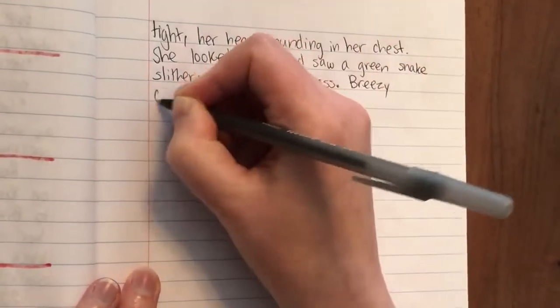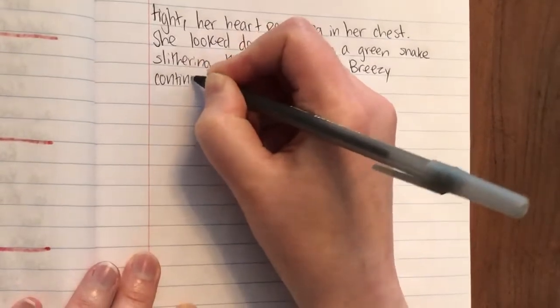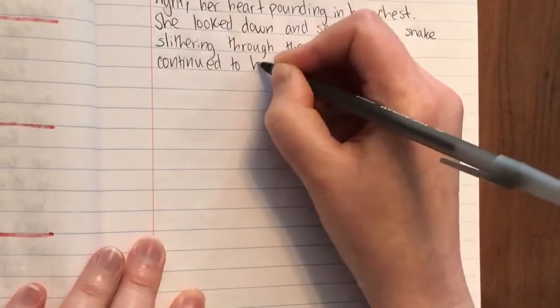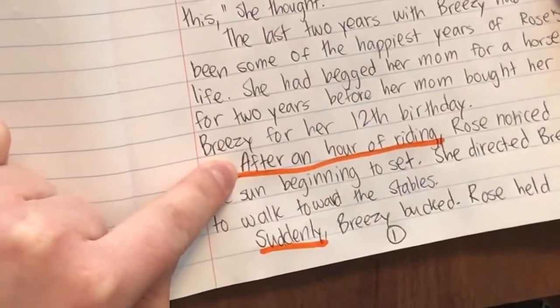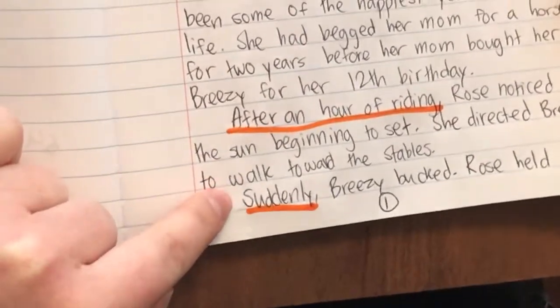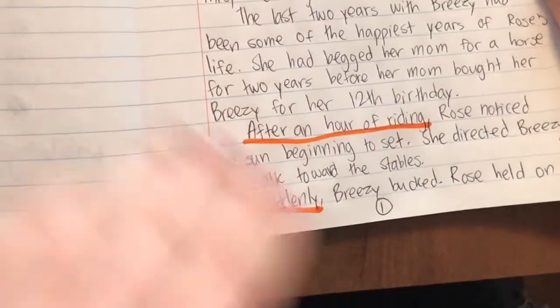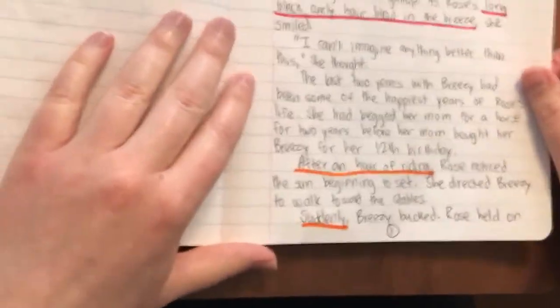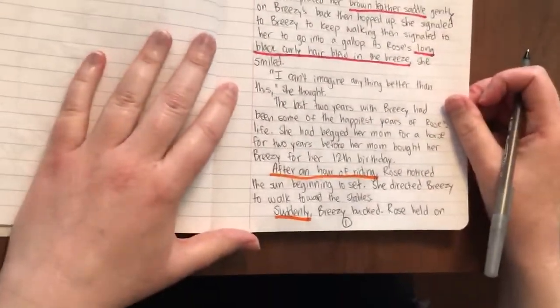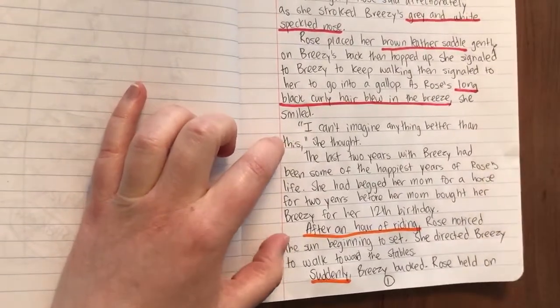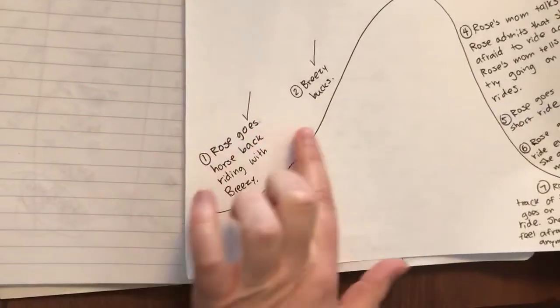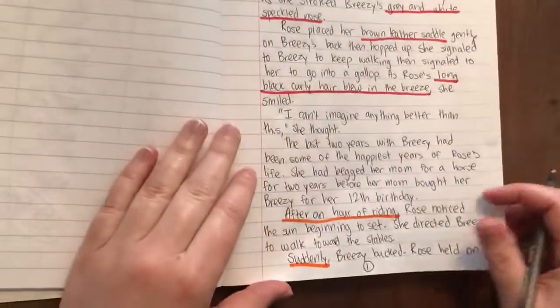Breezy continued to buck. I'm going to stop there today. I just want you to notice the two transitions I used: the transition phrase 'after an hour of riding,' and the transition word 'suddenly.' In your writing today, I'd really like you to think about using transition words. Now take out your writing notebook or your piece of writing paper, read the last paragraph that you wrote, look at your story arc to know where you are in your story, set a timer for 30 minutes, and then spend 30 minutes writing.